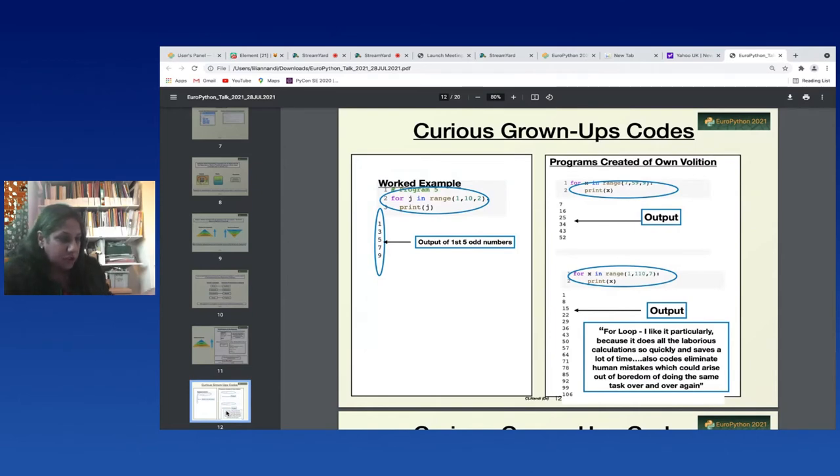So let's look at some of the output of the children and the adults. Let's look at the adults here. They were introduced to a worked example with a for loop: for j in range 1 comma 10 comma 2 print j. You see that it prints out the first five odd numbers. Now they went away, they had to learn about this between sessions, but they went away and of their own volition they created their own programs involving for loops. Now here we see for x in range 7 comma 59 comma 9 - what an unusual combination of numbers!